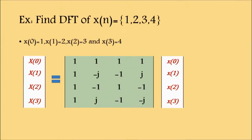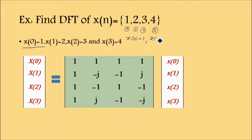We will solve a problem on DFT. Suppose the question is: find the DFT of x[n], where x[n] is given as {1, 2, 3, 4}. This is a 4-point DFT. First, write down the values. This is a discrete sequence with values at locations 0, 1, 2, and 3. So x[0]=1, x[1]=2, x[2]=3, and x[3]=4.